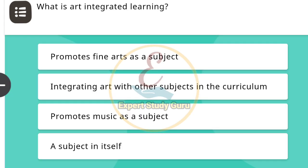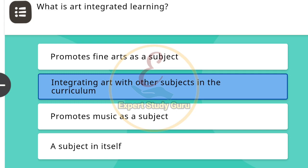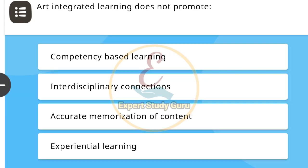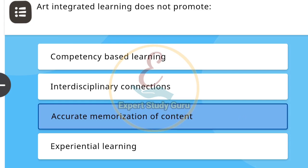What is art integrated learning? The correct answer is integrating art with other subjects in the curriculum. Next: Art Integrated Learning does not promote — the correct answer is accurate memorization of content.